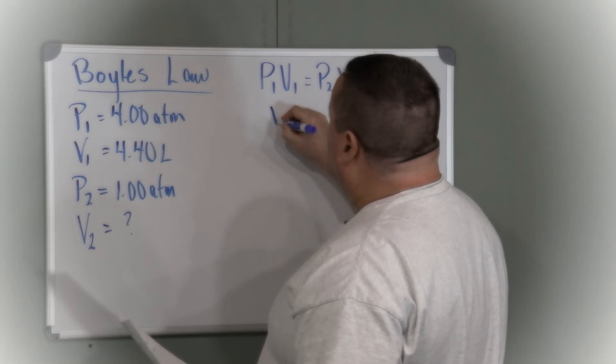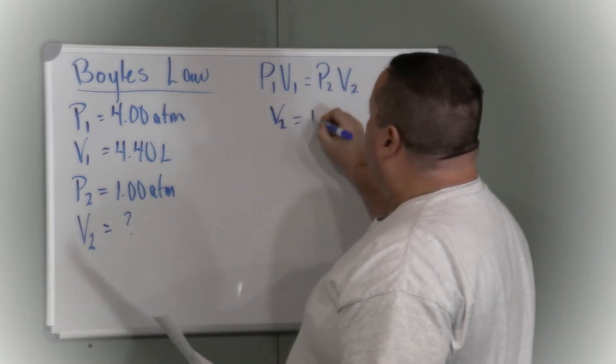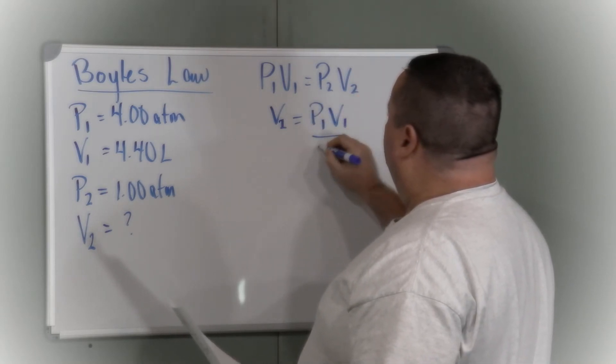So V2, rearranging Boyle's Law, V2 is P1 V1 over P2.